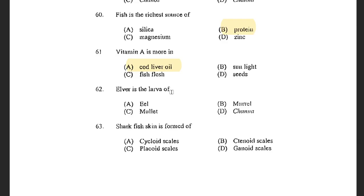Next question: Elver is the larvae of — options are Eel, Maral, Mullet, and Channa. The answer is Eel. Elver is the larvae of Eel. The larvae of Isopod is known as Epicaridium. The larvae of Jellyfish is Medusa. The larvae of Barnacles is Cypress. The larvae of Salmon is Alevin. The larvae of Squilla is Alima. The larvae of Polychaete is Trochophore, larvae of Prawn is Zoea, and larvae of Shrimp is Nauplius.